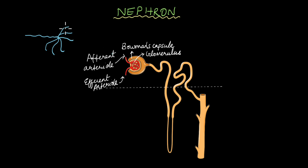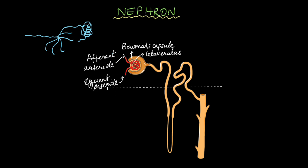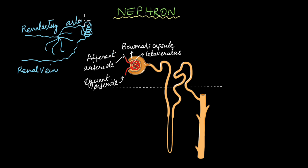These afferent arterioles split into tiny capillaries, forming a tuft or mesh-like structure called the glomerulus. It is at this glomerulus where the filtration of blood takes place. Whatever arteriole is exiting the glomerulus is known as the efferent arteriole, which takes the filtered blood and eventually becomes the renal vein. So the renal artery splits into arterioles, which become the capillaries of the glomerulus, and from the glomerulus the efferent arteriole emerges and later joins to become the renal vein.